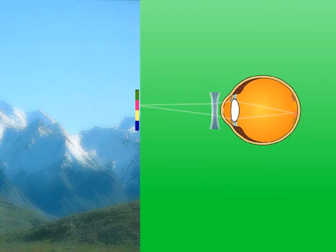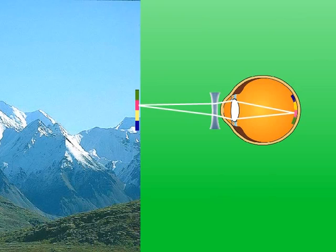The purpose of the concave lens is that the rays of light from infinity, that is, the distant scene, after refraction through the concave lens should appear to come from F, the far point of the defective eye.